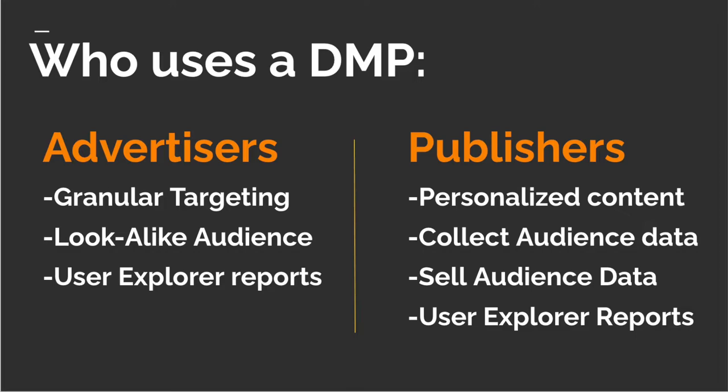A second use case for publishers: if I am a news channel with different sections including investment and business news, a forex company may want to buy data about people who visit business websites, as these audiences are relevant for them. I can use DMP to collect this data and sell it to advertisers through DMP without disclosing any PII about my audiences. Like advertisers, publishers can also use user explorer reports to understand the persona of audiences visiting their website.